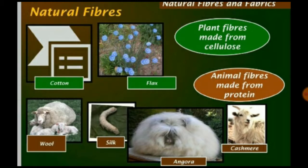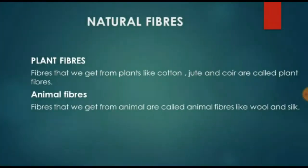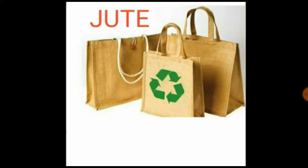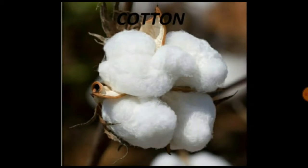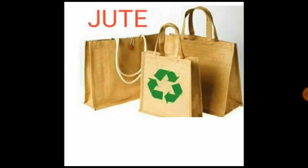First fiber is plant fiber. Fibers that we get from plants, like cotton and jute, are called plant fibers. Do you know, students, from where we get cotton? Yes, we get cotton from cotton plants. And from where we get jute? We get jute from the jute plant.